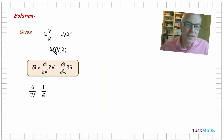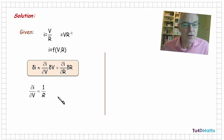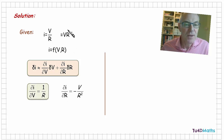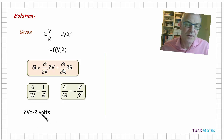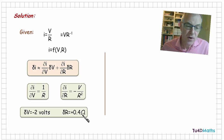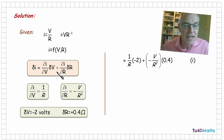So differentiating the current with respect to the voltage, keeping the resistance constant, gives dI/dV equal to 1 over r. And differentiating the current with respect to the resistance, keeping the voltage constant, we differentiate r to the power of minus 1, which gives minus r to the power of minus 2, which is minus v over r squared. So dI/dR is equal to minus v over r squared. Now the change in voltage is minus 2 volts, and the change in resistance is 0.4 ohms. Substituting these small changes and partial derivatives gives 1 over r times minus 2, plus minus v over r squared times 0.4.